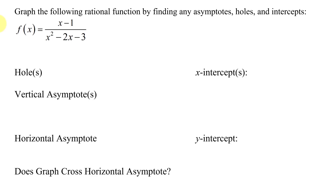In this example, I need to graph the following rational function by finding any asymptotes, holes, and intercepts. The rational function is f(x) equals the quantity x minus 1 all divided by x squared minus 2x minus 3.